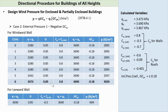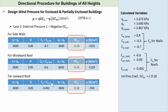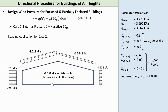Case 2, External Pressure 1 minus Negative GCPI. All variables used are the same as Case 1, except that negative 0.18 will be used for the value of GCPI. Updating the tables and recalculating using negative GCPI, we can get the values of P for each surface. Knowing all the surface pressures, we can also draw the wind action for Case 2.